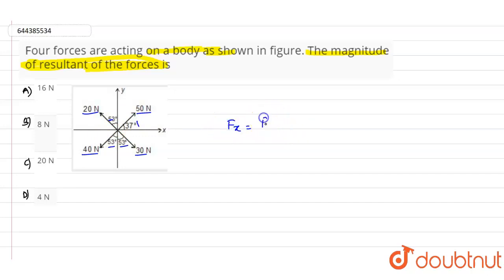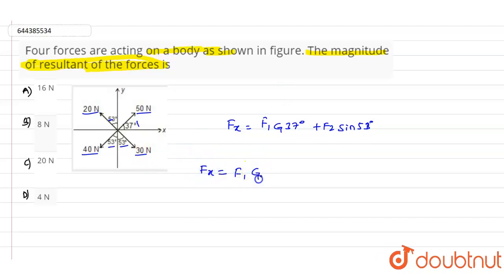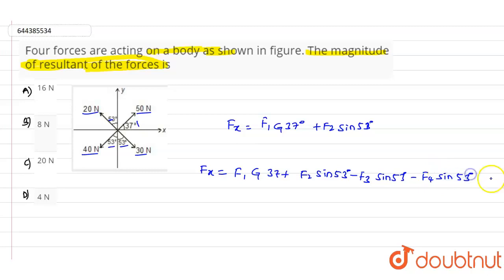From this figure, the value of Fx can be written as: Fx = F1·cos37° + F2·sin53° − F3·sin53° − F4·sin53°. So we have four forces contributing to the horizontal component Fx.